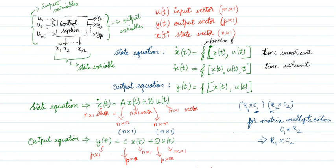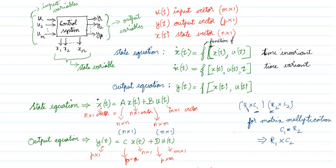We have a block diagram of the control system. Input variables are u1, u2, ..., um; output is y1, y2, ..., yp; state variables inside are x1, x2, ..., xn. So we have m input variables, p output variables, and n state variables. The input vector is m×1, the output vector is p×1, and the state vector x is n×1. We will frame two equations: state equations and output equations.